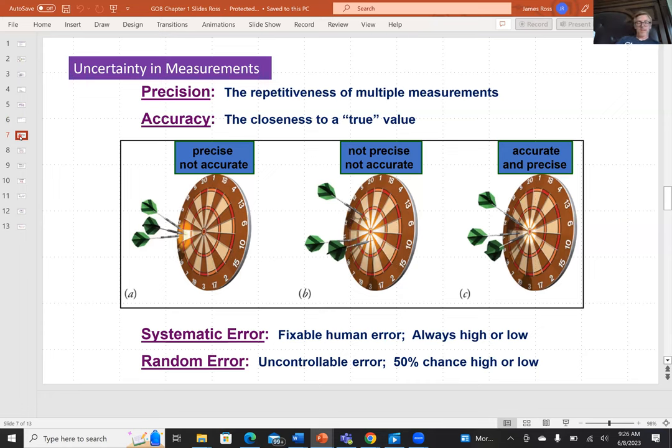Uncertainty in measurements. Measurements can be precise or accurate or both. And they can have errors. We want to maximize precision and accuracy. We want to minimize errors. So what's the difference between precision and accuracy? As the dartboard example shows here, these three darts have landed in a region offset from the bullseye. They're all clustered around the same location. So they are precise because precision is repetition or reproducibility. So whoever threw these darts in figure A is precise, but they missed the bullseye, so they are not accurate, where accuracy is your ability to hit an intended mark or a true target.